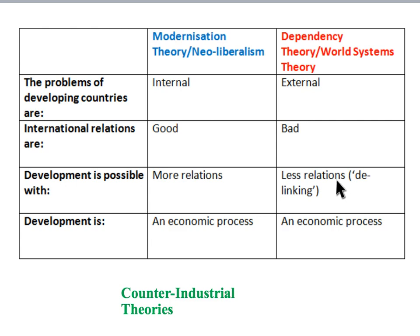From this perspective, what is needed for poorer countries to develop is not more relations with the rich world, but less. They need to become delinked from the global capitalist economy if they are really to achieve development. Where both perspectives are similar is that they both see development as fundamentally an economic process. The counter-industrial theories we've looked at in this course would be critical of seeing development purely in economic terms, and would be particularly anxious about the sustainability of economic development in either perspective.